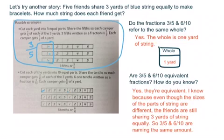So again, here's camper one, one, one, one, one, one, six of those out of tenths, right? So, on back to that same question, do the fractions three fifths and six tenths refer to the same whole? Well, yes, the whole is one yard of string. So are three fifths and six tenths equivalent fractions then? And how do you know? Again, yeah, they're equivalent. I know, because even though the sizes of the parts of the string are different, the friends are still sharing three yards of string equally. So three fifths and six tenths are naming the same amount. That's what makes it so that I know they're equivalent.